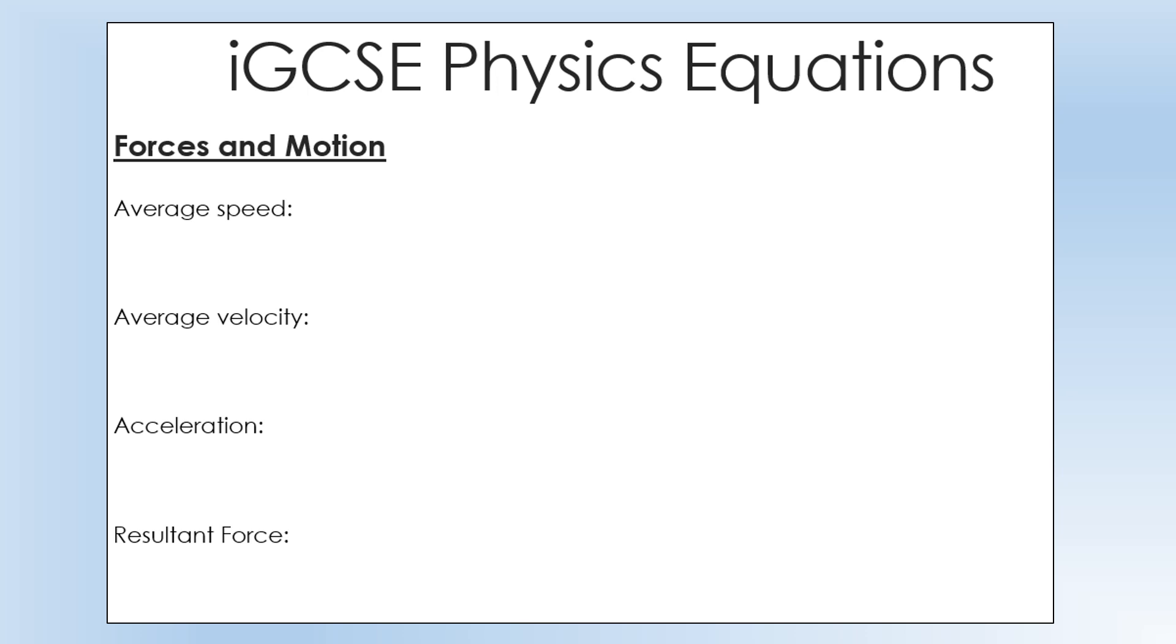One of the first equations you'll come across is the average speed equation. Many people know this equation as speed equals distance over time. That's not technically true, it's average speed equals distance over time. Distance would usually be in meters, time in seconds giving you a speed in meters per second, sometimes written as meters seconds to the minus one. Those two are the same thing.